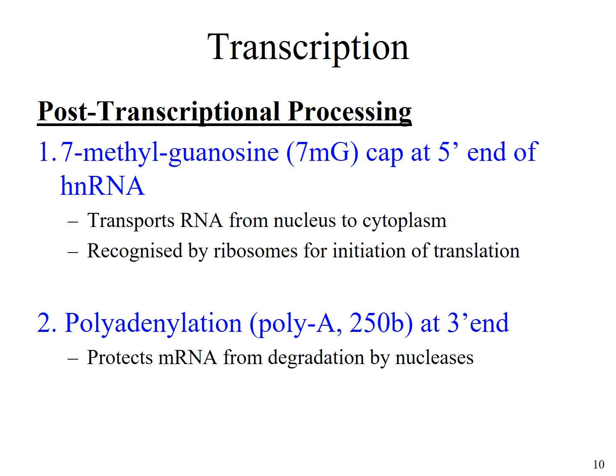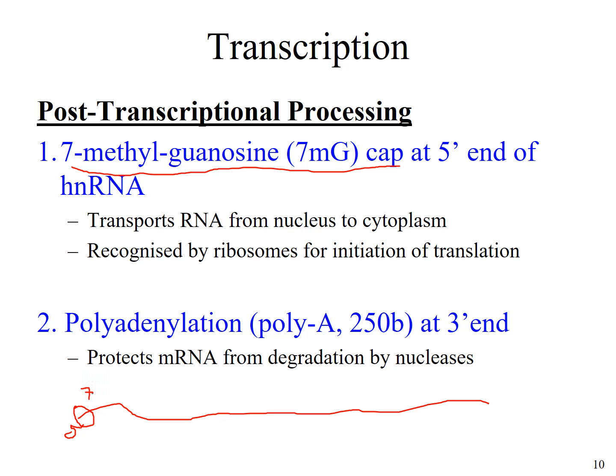To become a mature mRNA, the HnRNA undergoes modifications in the nucleus. First is capping: a 7-methylguanosine cap is attached to the 5' end of the HnRNA. The function of this cap is to transport the RNA from the nucleus to the cytoplasm. It also allows ribosomes in the cytoplasm to attach to this cap and start translation — translating the message in the mRNA into proteins.